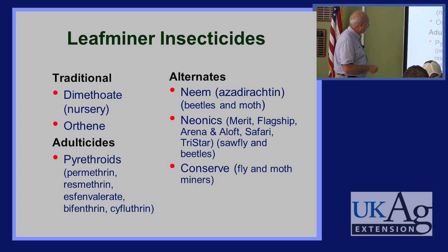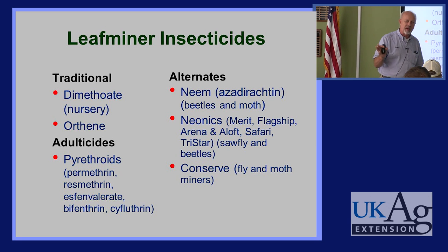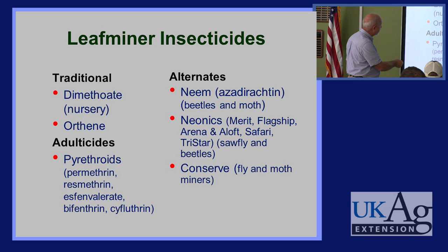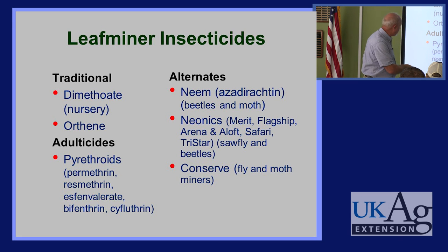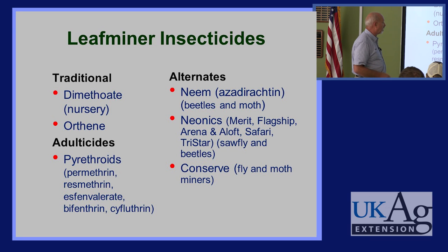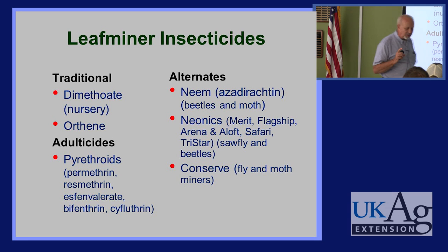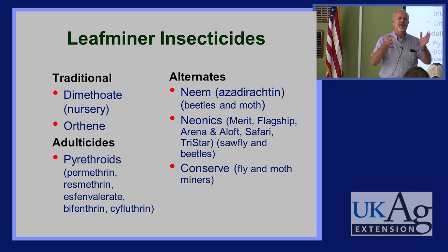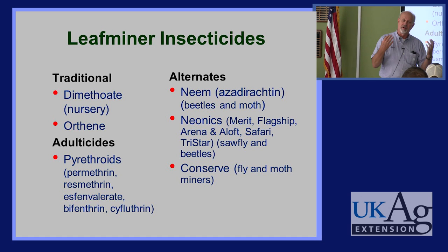In adulticides, virtually all the pyrethroids work, but what's unique? Pyrethroids are only contact or surface-feeding materials — they have to be used preventively. Trying to get out there a day or two before a leaf miner adult is ready to lay eggs is almost impossible. How about some of the newer materials? A lot of people are worried about neonicotinoids, but not all neonicotinoids are the same — that's like saying all organophosphates are the same.